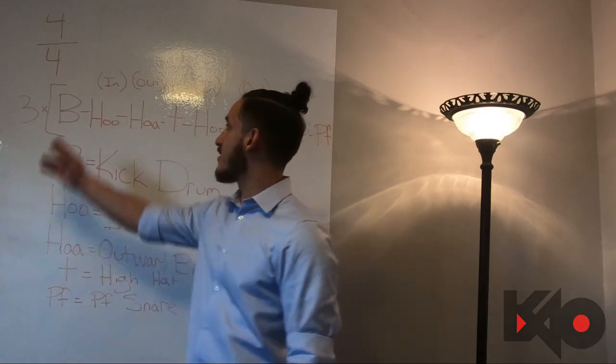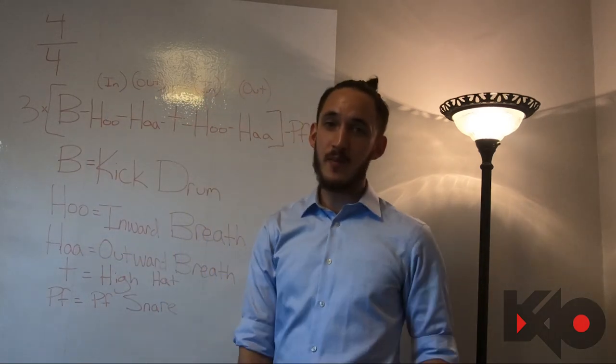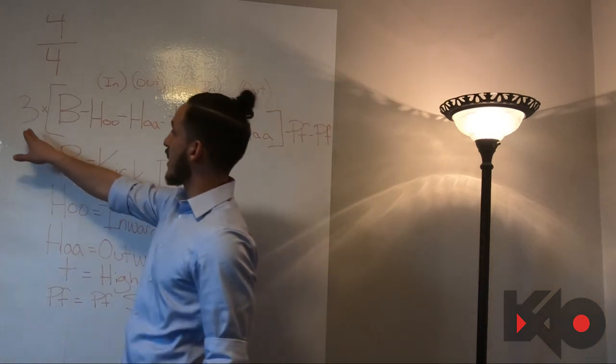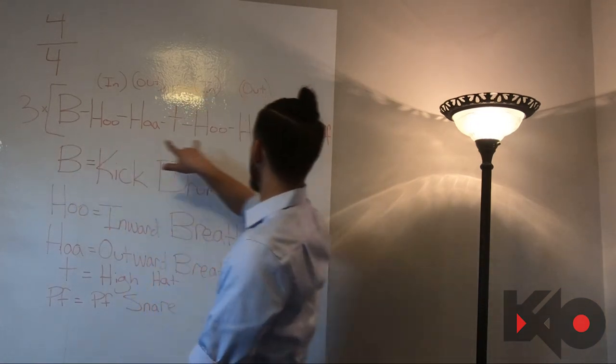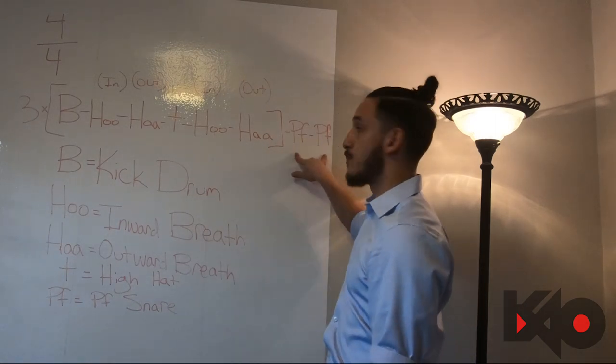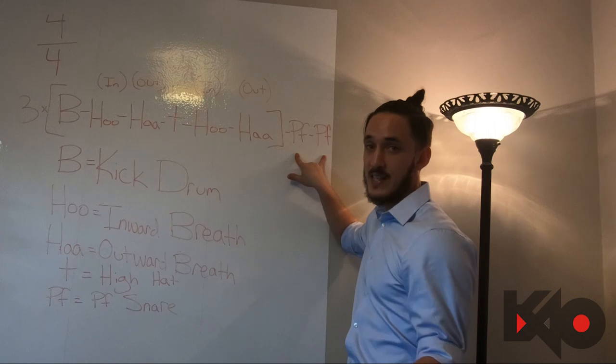So this pattern is in 4-4, so there's going to be four beats in the measure. What we're going to do is see this three times here, we're going to repeat the brackets—that's going to be the first three measures—and then this PF snare here is going to be the last beat in the measure.